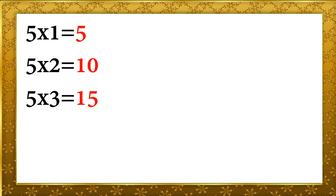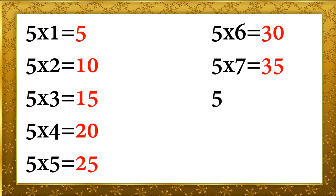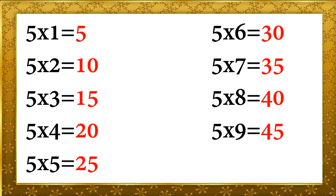5 ones are 5, 5 twos are 10, 5 threes are 15, 5 fours are 20, 5 fives are 25, 5 sixes are 30, 5 sevens are 35, 5 eights are 40, 5 nines are 45, 5 tens are 50.